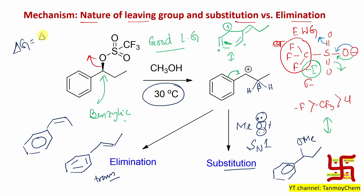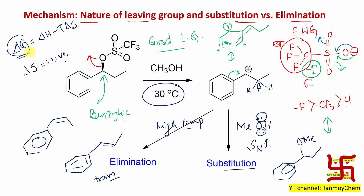Elimination reactions are favored at high temperature. Using ΔG = ΔH – TΔS: in elimination, from one molecule you produce two molecules, so ΔS is positive. As you increase temperature, the TΔS term becomes more positive, and because of the negative sign, it makes ΔG more negative — meaning the reaction is more spontaneous. That is why elimination reactions are generally preferred at high temperature — they are entropically favored.